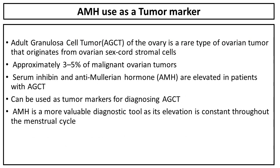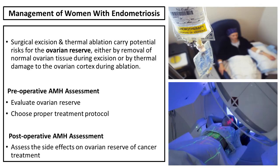Adult granulosa cell tumor of the ovary is a rare type of ovarian tumor that originates from ovarian sex-cord stromal cells and represents approximately three to five percent of malignant ovarian tumors. Both serum inhibin and anti-Müllerian hormone are elevated in patients with granulosa cell tumor and can be used as tumor markers for diagnosis. However, AMH is a more valuable diagnostic tool as its elevation is constant throughout the menstrual cycle.